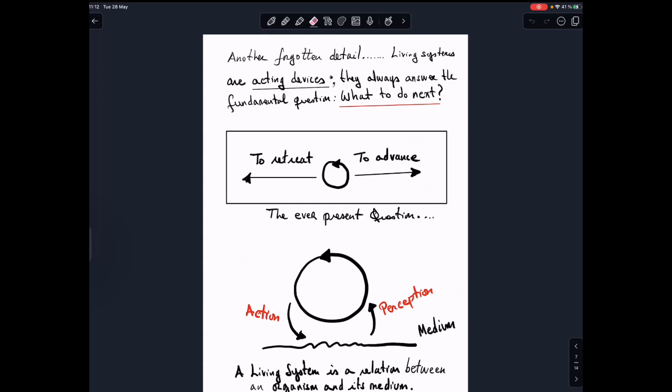Then you cannot analyze a living system in the void. Here I show that a living system is always in a relation, a living system is always in a relation with the medium through action and perception. And here is a new concept in the theory. The living system is a relation between an organism and its medium. I mean, I will put here perhaps a living system is in a relation between an autopoietic system and its medium. They don't exist in a void.